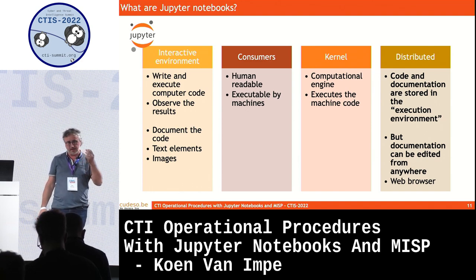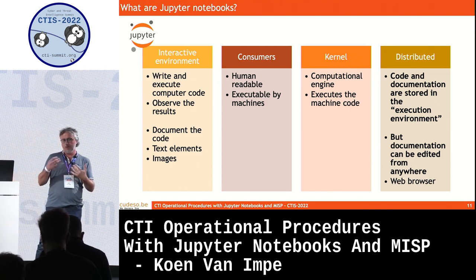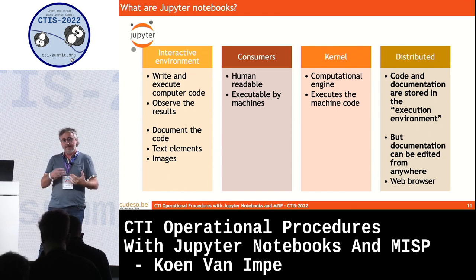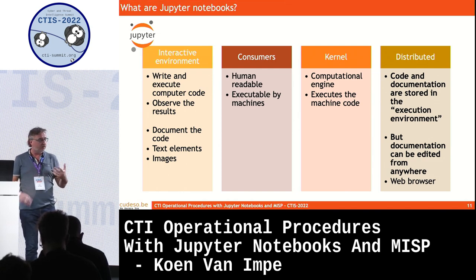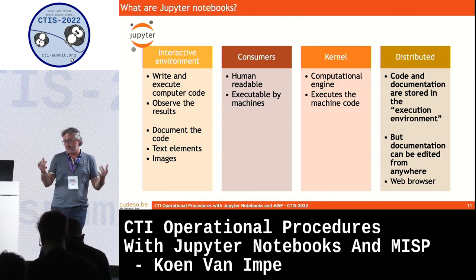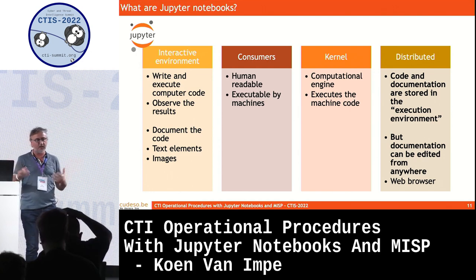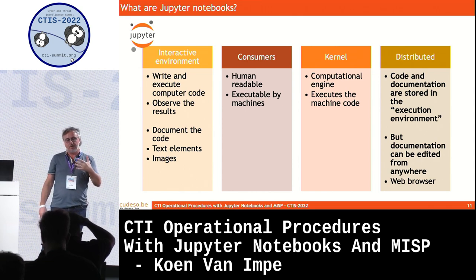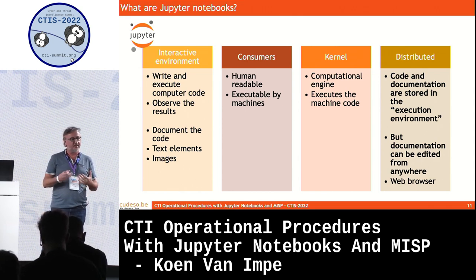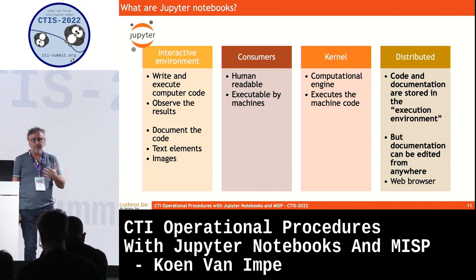Next to code, you can also attach documentation in text format or Markdown, and you can attach images. This gives two consumer types: the human, who can read the documentation and the output of the executed code, and at the same time the code can be executed by a computer. That execution is done through a kernel — a computational engine — which can run on almost any system, typically a Linux environment. The documentation is saved in the same location where the kernel is running, but editing can be done from anywhere.